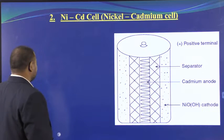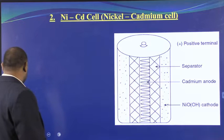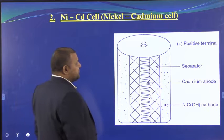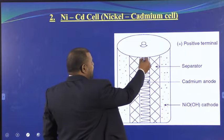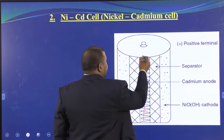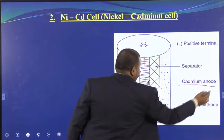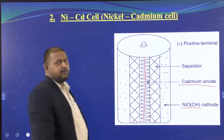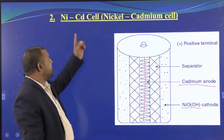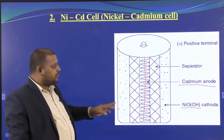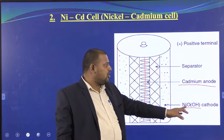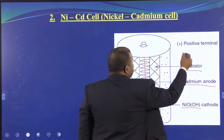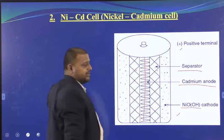Now we shall see the construction and working of the nickel cadmium battery. The cadmium rod is the anode. Inside, we have nickel oxide hydroxide (NiOOH). These two are separated using a separator. So the positive electrode is nickel oxide hydroxide and the negative electrode is cadmium.